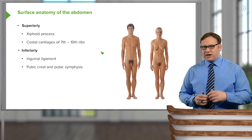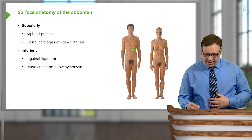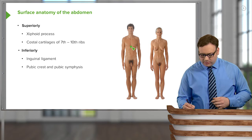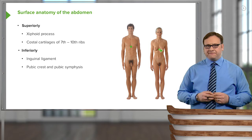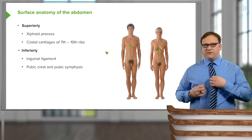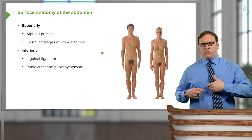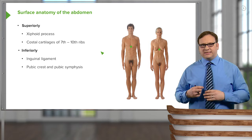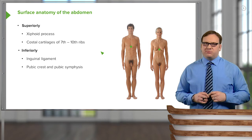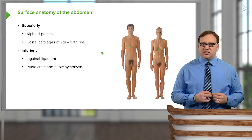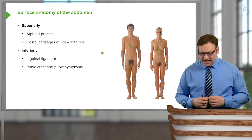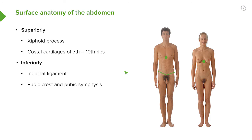We can start off superiorly with the xiphoid process, which in the male we can see is here, and in the female is about here. We can feel this landmark on ourselves — if you feel your sternum in your thoracic cavity and go inferiorly, where it stops is your xiphoid process. Radiating laterally away from this process, we have the costal cartilages of ribs 7, 8, 9, and 10, and these mark the superior boundary of the abdomen.